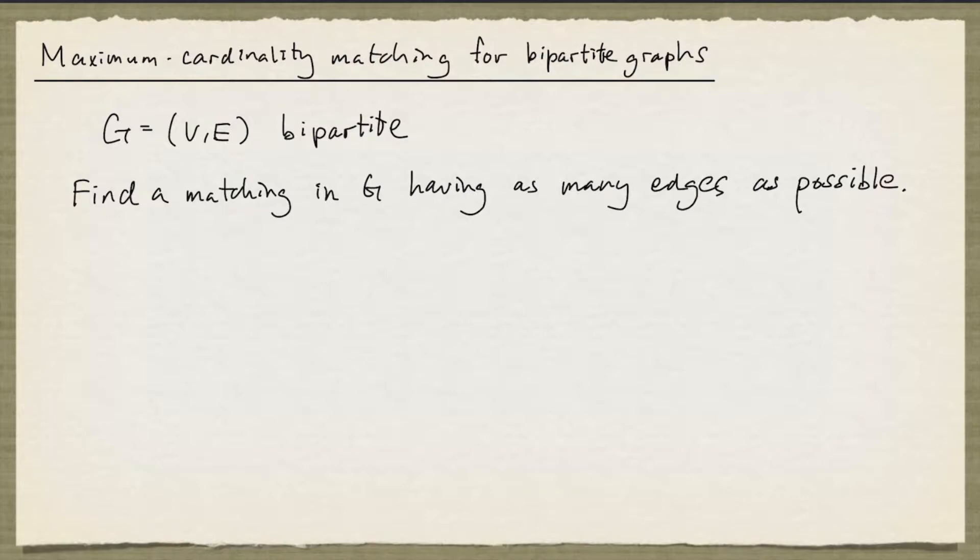And to work towards that, we need the notion of a node cover. So we call a subset of the nodes, C, a node cover if every edge in G has an end in C.